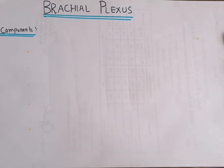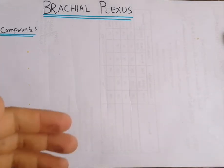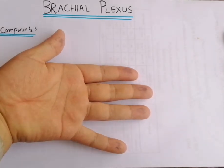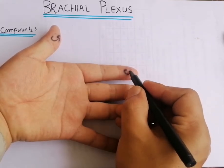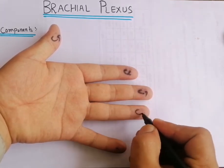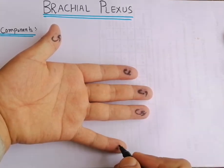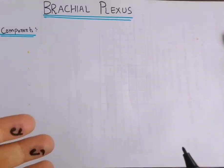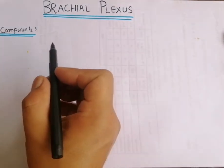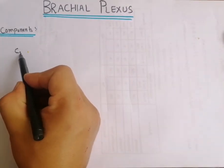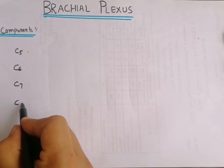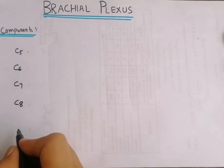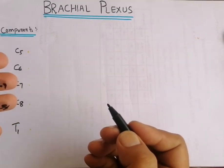In order to draw the brachial plexus, first write the root values, which are five in number and can be remembered with the fingers of the hand: C5, C6, C7, C8, and T1. These are the root values of the brachial plexus.